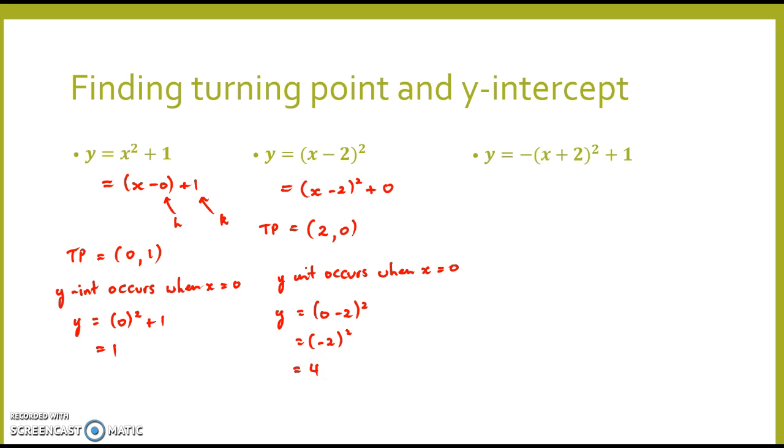And one final example. In this case, still trying to find the turning point. It's already in that form, the general form. So the turning point's relatively easy to identify. And that will be negative 2, a translation of 2 to the left and 1 up. So there's my turning point.